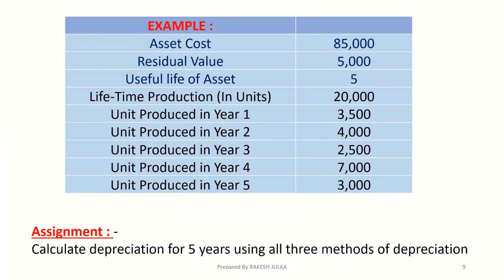Here is an example to explain all three methods. Asset cost is $85,000, residual value (scrap value) is $5,000, useful life is 5 years, and lifetime production in units is 20,000. Units produced in year one through five are 3,500, 4,025, 7,000, 3,000, and 3,000 respectively. Calculate the depreciation for five years using all three methods.